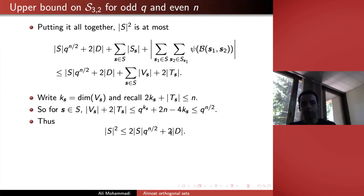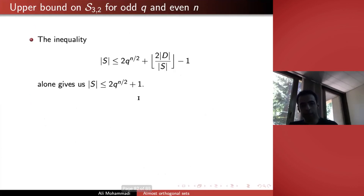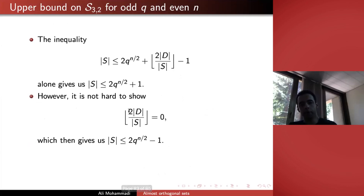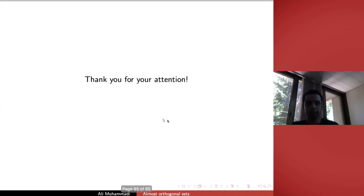Adding it all up, we get |S|^2 bounded by the sizes of the orthogonal subspaces plus a remainder. Using the structural lemma inequality for each s, the bound inside is q^(k_s) + (N - 2k_s) where k_s = dim(V_{s1}), maximized at roughly N/2, giving q^(N/2). So |S| ≤ 2·q^(N/2) + 1. We then show in the paper that |D| is much smaller than |S|, so it contributes 0. Getting the minus 2 instead of just minus 1 takes three more pages, but yields the full conjecture. Many thanks for your attention.